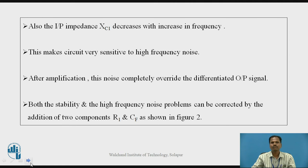Also, the input impedance XC1 decreases with increase in frequency, making the circuit very sensitive to high frequency noise. After amplification, the noise signal completely overwrites the desired differentiated output signal. Both circuit stability and the high frequency noise problem can be corrected by the addition of two components: resistor R1 and capacitor CF in the basic differentiator circuit, as shown in figure 2.